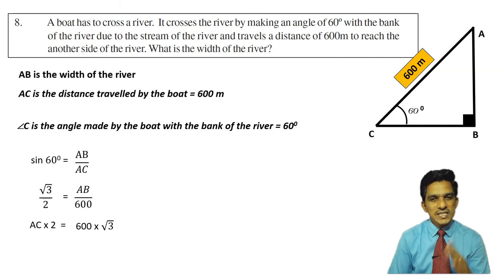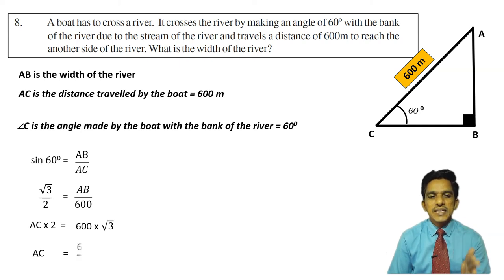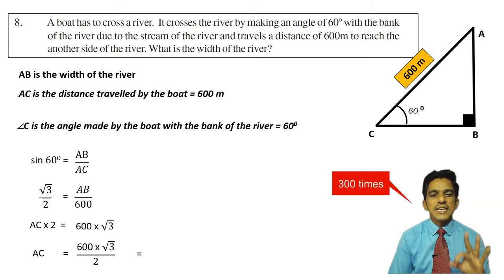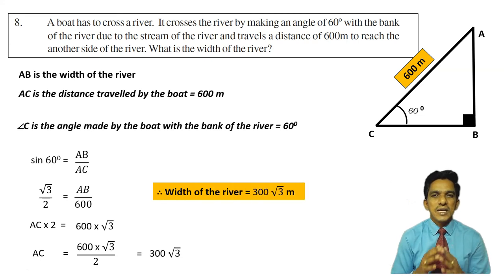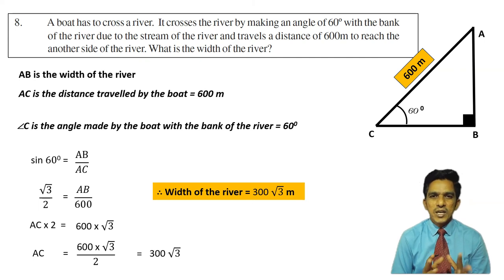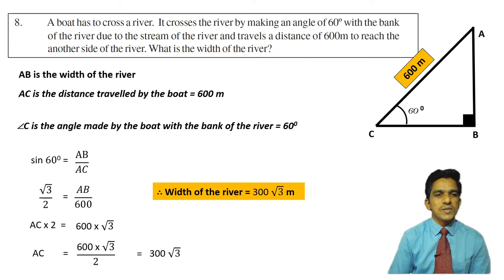Let us take sine. Sine 60 degrees is AB by AC, opposite by hypotenuse. Sine 60 degrees is root 3 by 2. So root 3 by 2 is equal to AB by 600. Cross multiply: AB into 2 is equal to 600 into root 3. AB is equal to 600 root 3 by 2, which gives 300 root 3. Therefore the width of the river is 300 root 3 meters. You can substitute root 3 as 1.732 to get the decimal value.